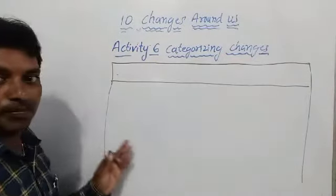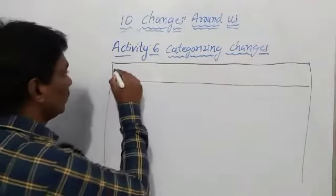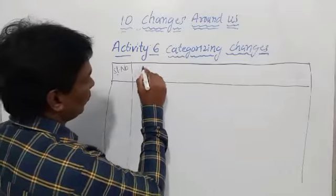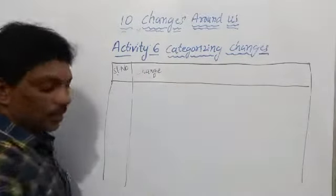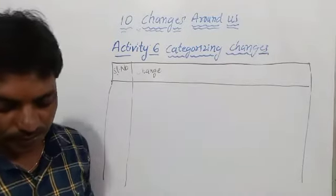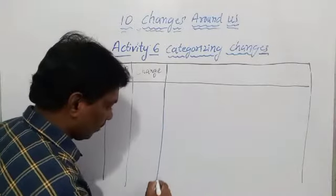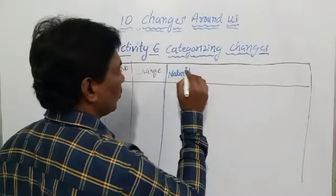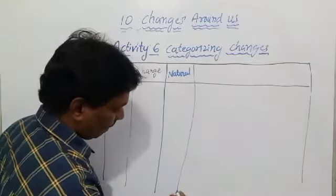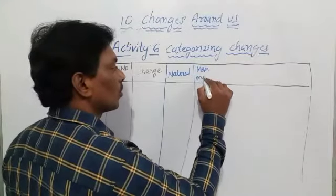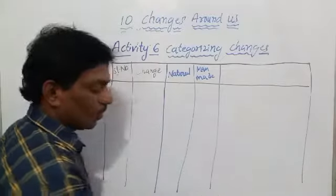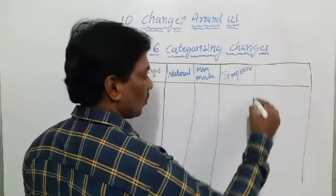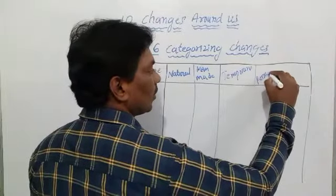I am going to write with small letters because the table is big and it may not fit on this board. The table has the following columns: serial number, change, natural or man-made, and temporary or permanent.